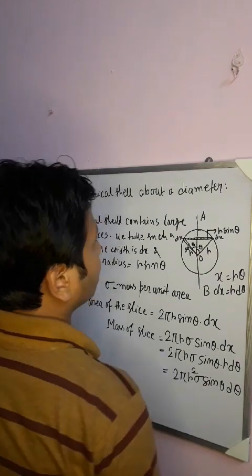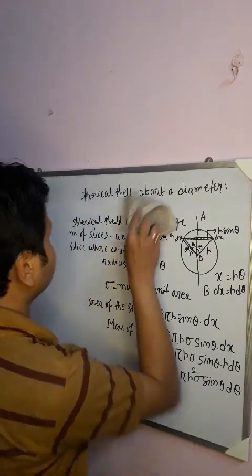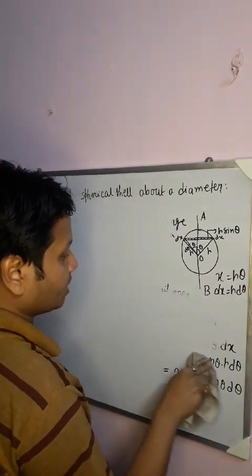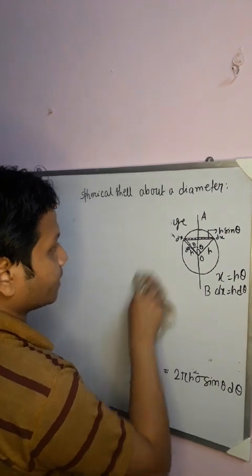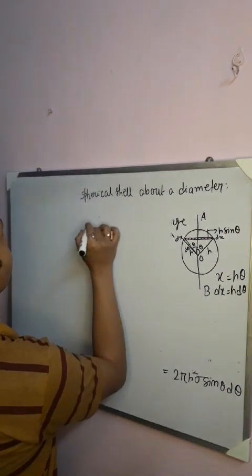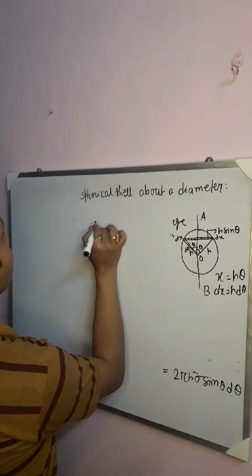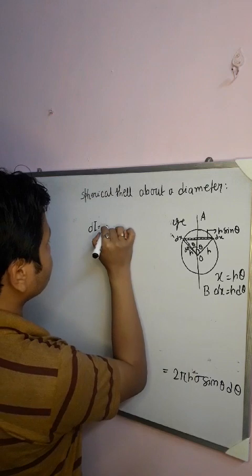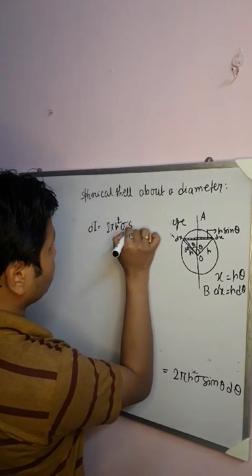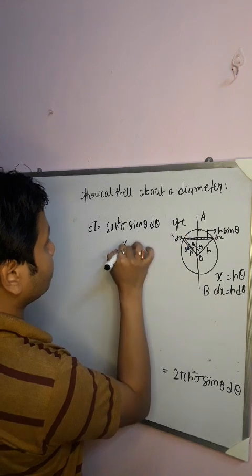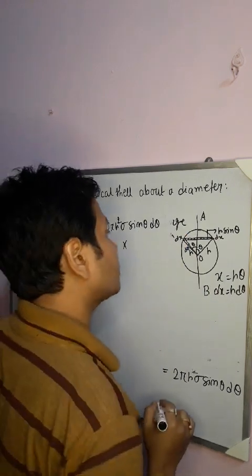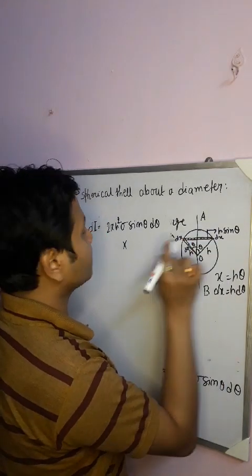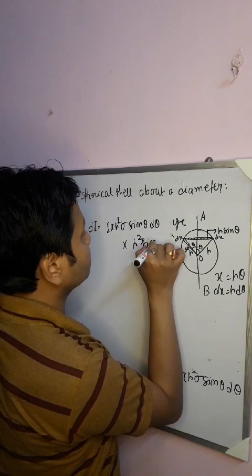The moment of inertia of the slice about the axis of rotation — that is, about the diameter — if we call it dI, equals mass times distance squared. The mass is 2πR²σ sinθ dθ, multiplied by the perpendicular distance from the axis, which is R sinθ, so dI = 2πR⁴σ sin³θ dθ.